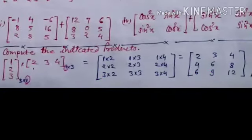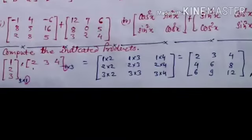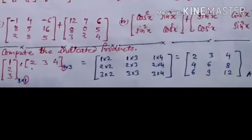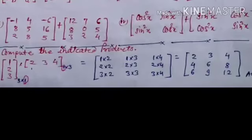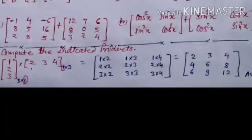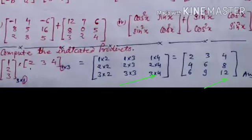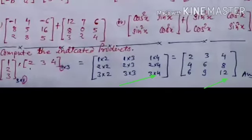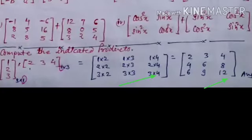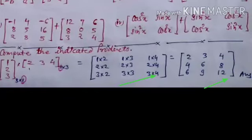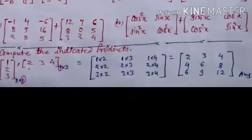So: 1 into 2 is 2, 2 into 2 is 4, 3 into 2 is 6. 1 into 3 is 3, 2 into 3 is 6, 3 into 3 is 9. 1 into 4 is 4, 2 into 4 is 8, and 3 into 4 is 12. This is the answer.